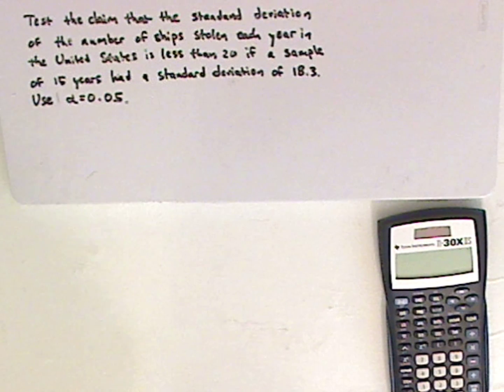Hi, I'm JD, and what we're going to be doing today is a hypothesis test for standard deviation. Let me read the problem to you. First, test the claim that the standard deviation of the number of ships stolen each year in the United States is less than 20. If a sample of 15 years had a standard deviation of 18.3, use alpha equals 0.05. So pause the video and see if you can try to do this one on your own.